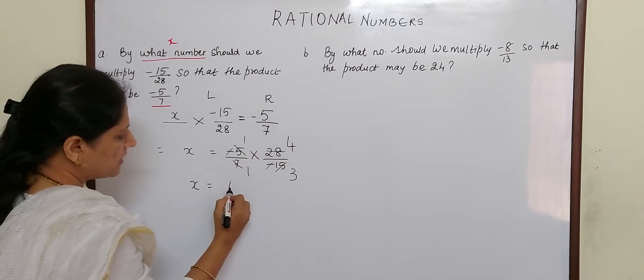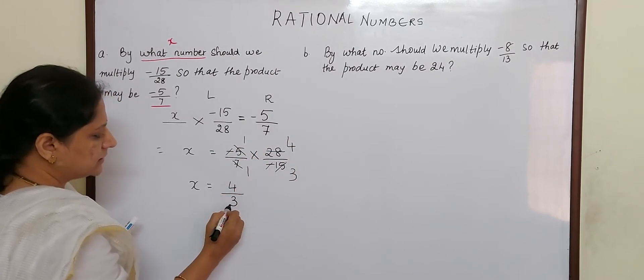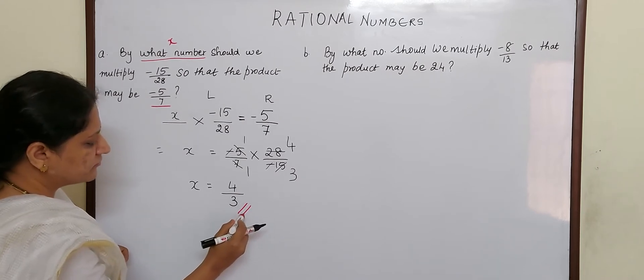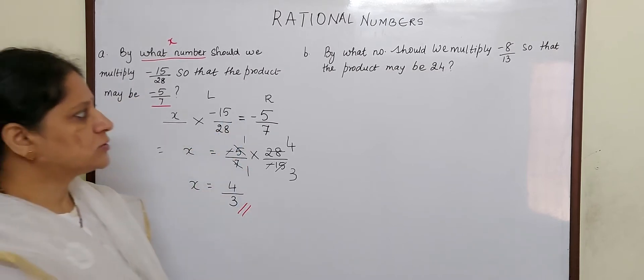So 1 times 4 is 4, by 1 times 3 is 3. So your answer is 4/3. That means 4/3 has to be multiplied by this to get -5/7. Let us go to the next sum.